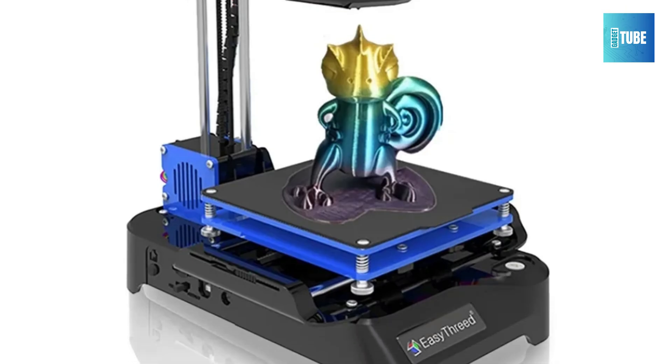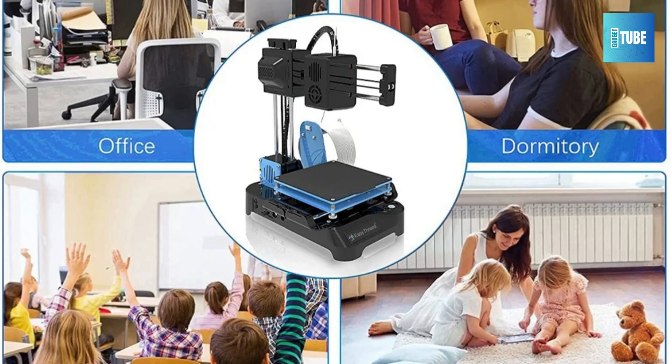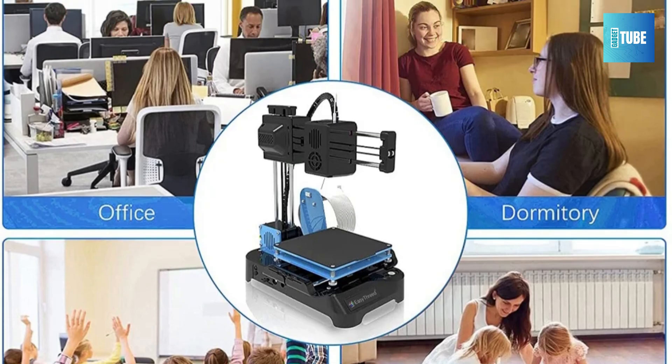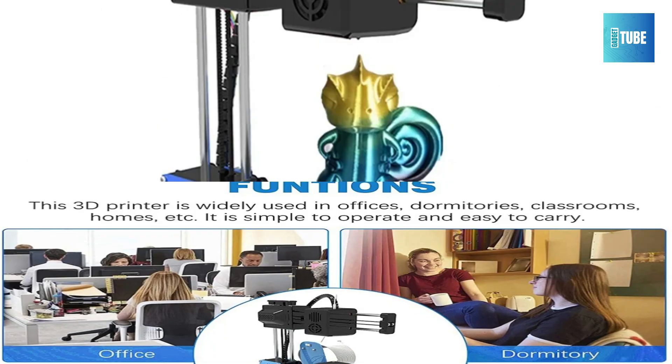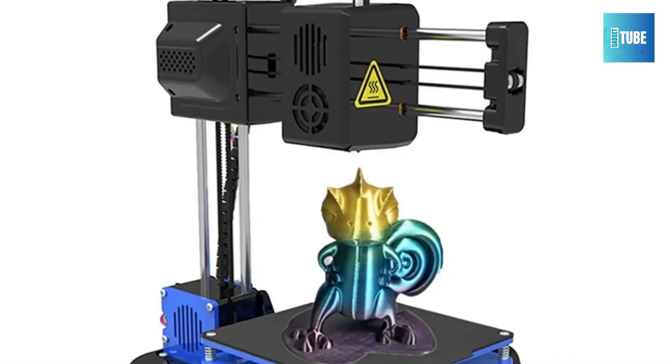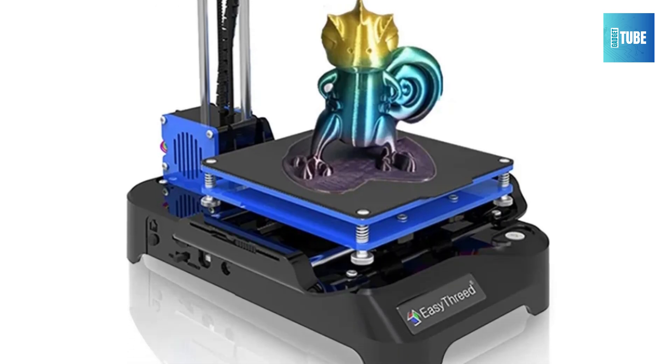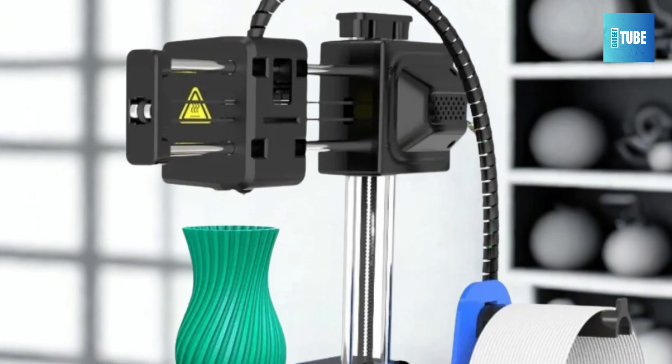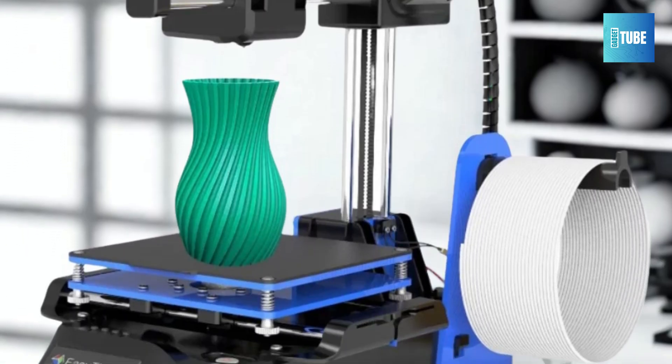Despite its small footprint, it offers a 100x100x100mm build volume and works with STL and OBJ files, outputting in G-code. No auto-leveling needed. Just plug in and print. From school projects to weekend creations, the EZ3D K7 is a safe and smart entry point into the world of 3D printing.